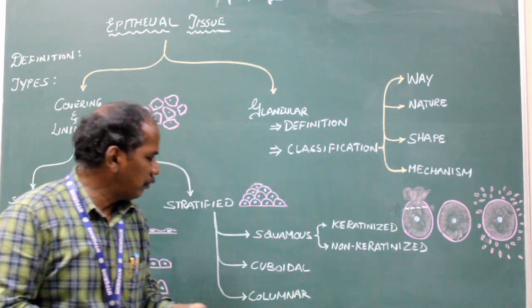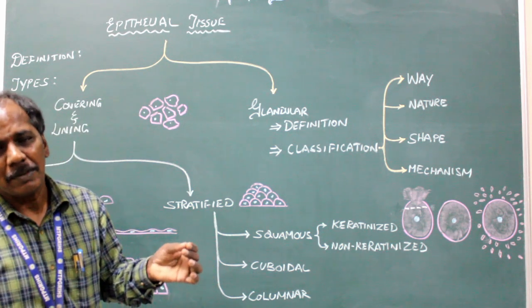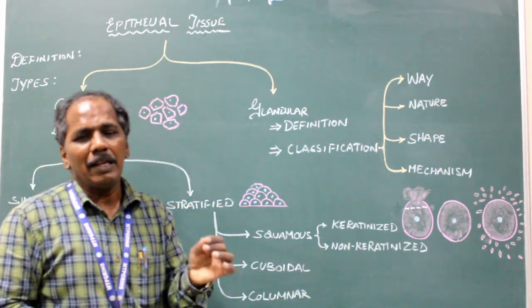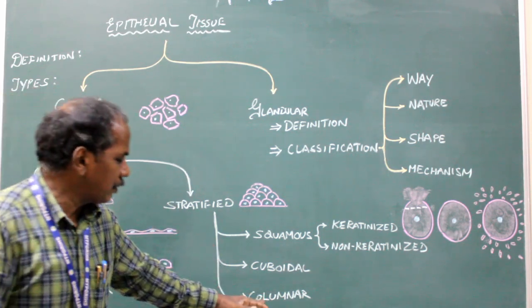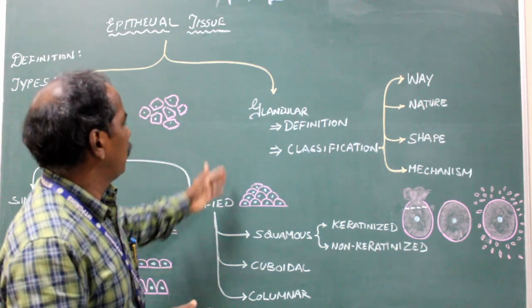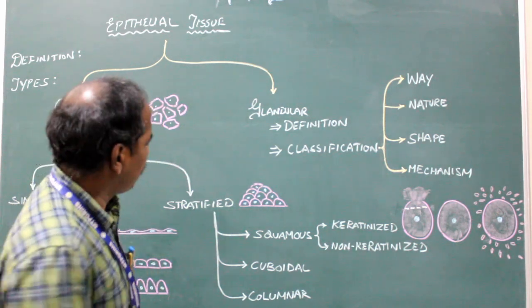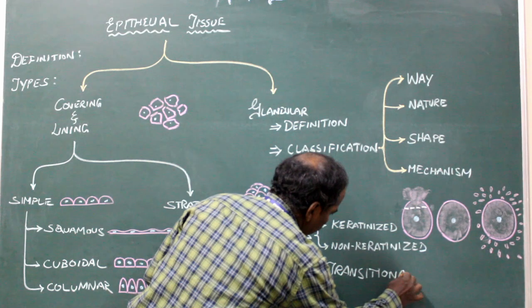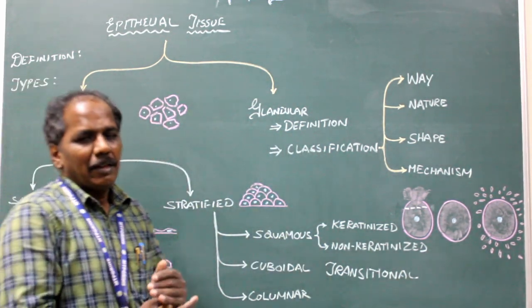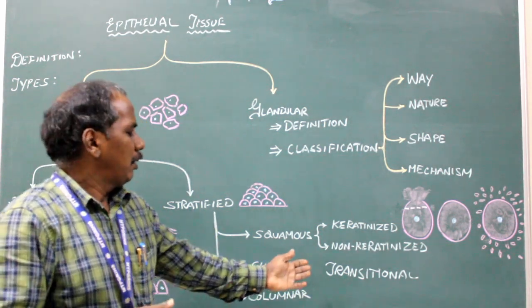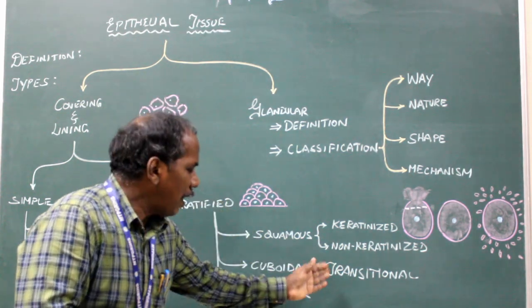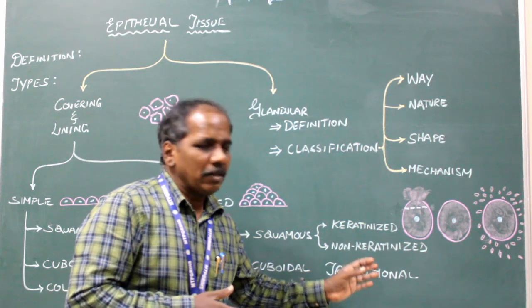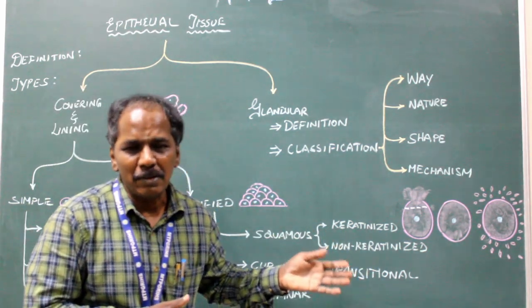Stratified cuboidal epithelium is present in seminiferous tubules and sebaceous glands. Stratified columnar epithelium lines the ducts of large glands. Transitional epithelium: transitional means altering its shape — it goes on changing its shape from time to time. It is present in the urinary bladder, ureter, and urethra — mainly in the urinary system. Transitional epithelium is otherwise known as urothelium.